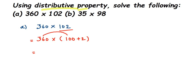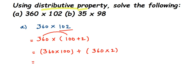We chose 100 plus 2 because it's easy to multiply with 100 and with 2, instead of directly with 102. So this becomes 360 multiplied by 100, plus 360 multiplied by 2. Multiplying by 100 just adds two zeros: 36000. Then 360 multiplied by 2 equals 720. Adding these two gives 36720. That's it!